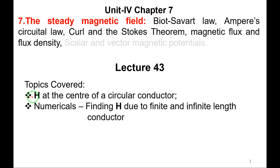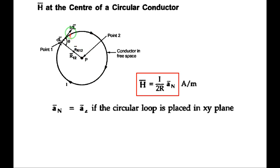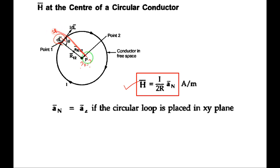Today we will see one more formula and solve numericals. The magnetic field intensity H at the center of a circular conductor is H = I/(2r) · an. Here r is the distance from source point to field point, and an is a unit vector indicating the direction of the magnetic flux lines, which is perpendicular to the plane containing the circular conductor.